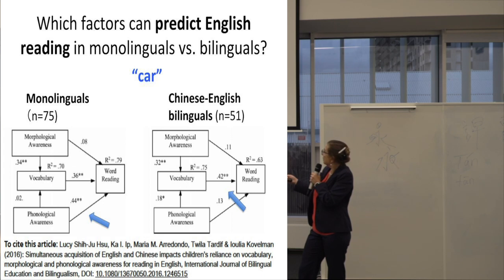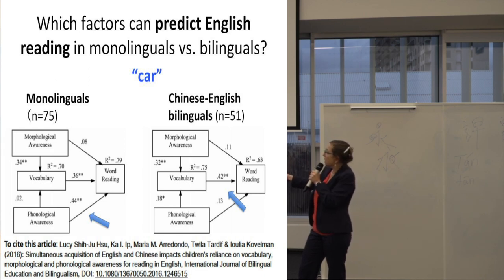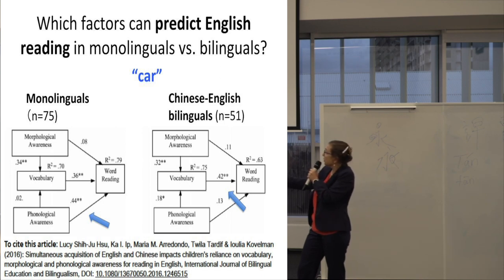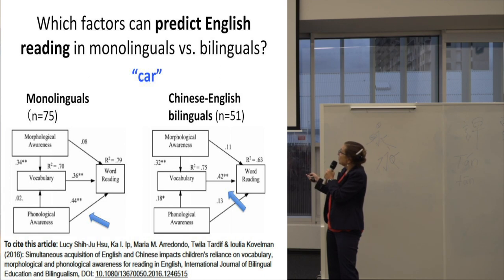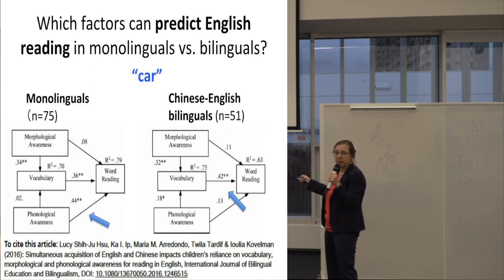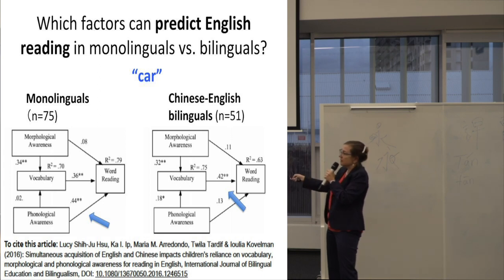Monolingual English speakers — we tested their morphological awareness: not significant. We found phonological awareness highly predictive, and vocabulary highly predictive. Morphological awareness is highly related to vocabulary, whereas phonological awareness in this sample of slightly older children is not. What about Chinese-English bilinguals? Remember, reading in English. We find that morphological awareness also doesn't matter. Phonological awareness is a little bit more strongly related, but this phonological awareness pattern is not significant. So we don't have morphological awareness taking over, but it's not the same as in English speakers.